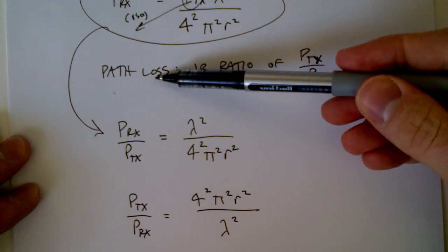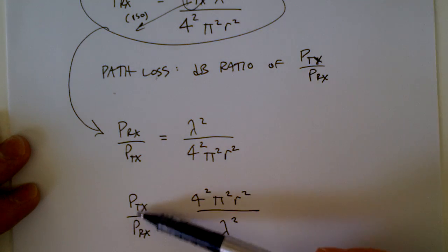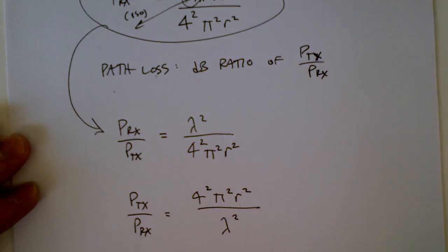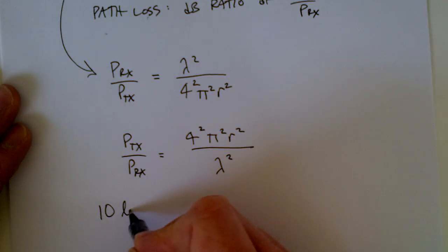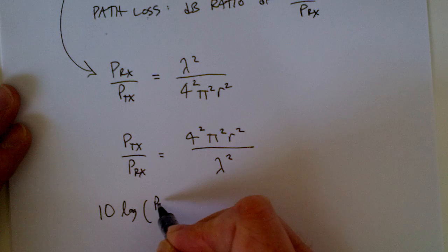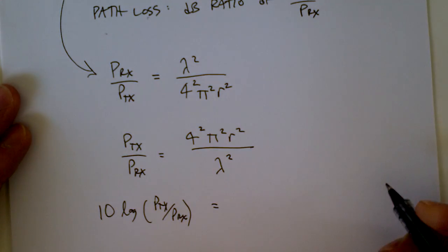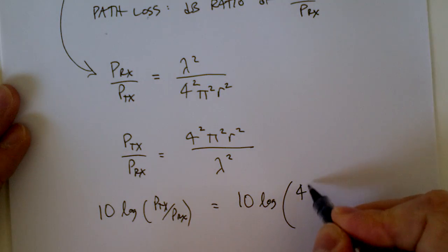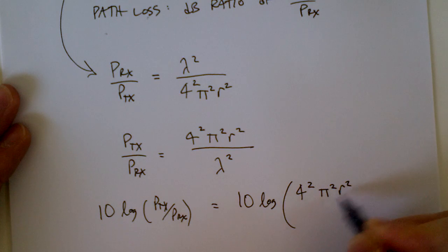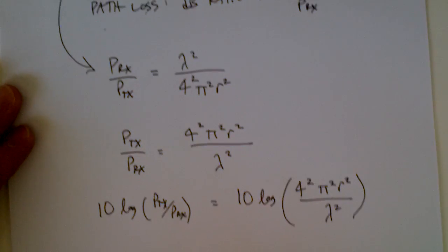But if I want path loss, it would be the dB ratio of this, which is the dB ratio of this. How do I do that? Well, what I would do is 10 log of transmit power over receive power. So I'm 10 logging both sides. 10 log of 4 squared, pi squared, r squared over lambda squared.